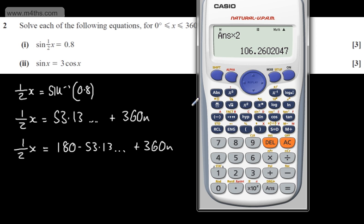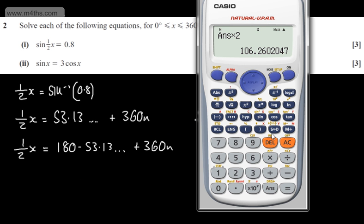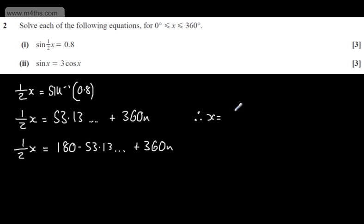Multiplying this answer by 2 gives me 106.26... Any other solutions are going to be 720 degrees on, so we will not have another valid solution. Therefore, from this one, x = 106.3 degrees correct to one decimal place.